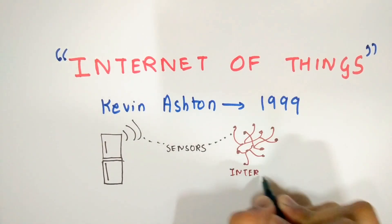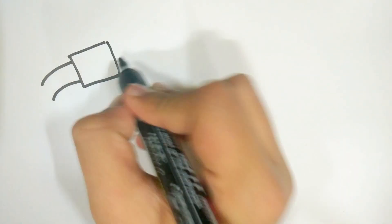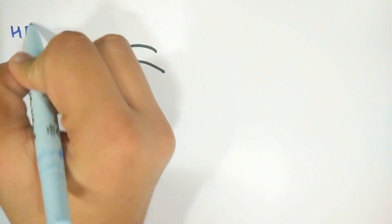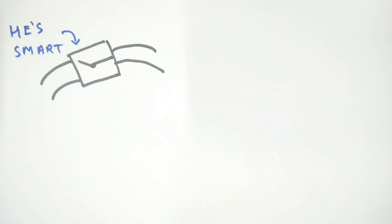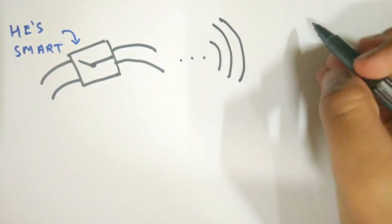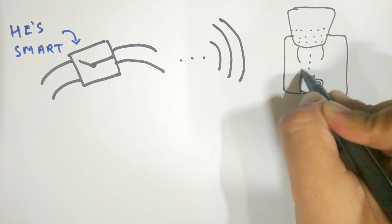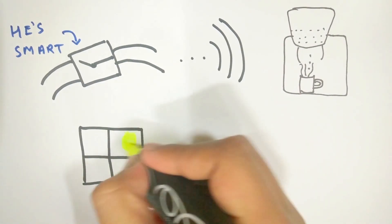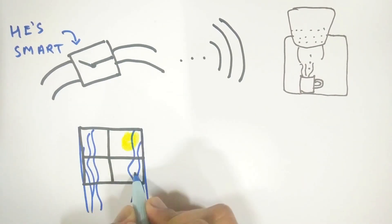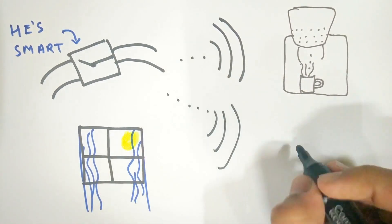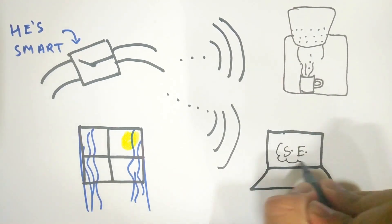Here's an example: your smartwatch predicts when it is the best time for you to wake up and the alarm rings. The watch then sends this information to the coffee machine, which brews coffee while you get out of bed. The curtains open automatically, letting some sunlight in. Your laptop turns itself on and opens your favorite website, which you browse while sipping on the hot cup of coffee.